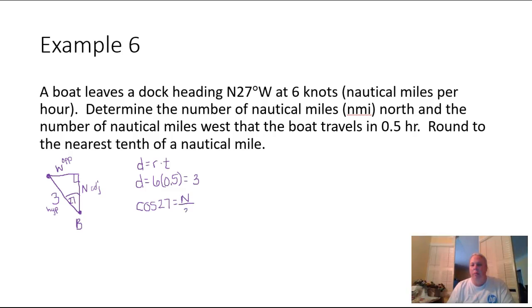If we put this over 1 and cross multiply, we will have 3 times the cosine of 27 degrees equal to 1 times N. And then when we put that into the calculator, that is going to give me 2.7 nautical miles.